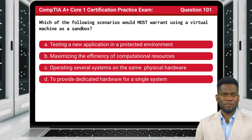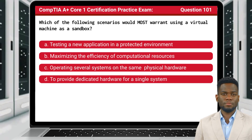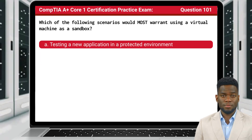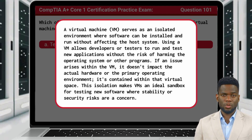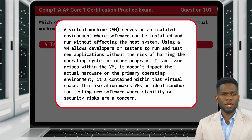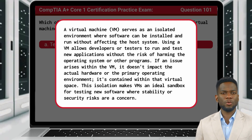Question 101: Which of the following scenarios would most warrant using a virtual machine as a sandbox? The answer is A: Testing a New Application in a Protected Environment. A virtual machine serves as an isolated environment where software can be installed and run without affecting the host system. Using a VM allows developers or testers to run and test new applications without the risk of harming the operating system or other programs. If an issue arises within the VM, it doesn't impact the actual hardware or the primary operating environment — it's contained within that virtual space. This isolation makes a VM an ideal sandbox for testing new software where stability or security risks are a concern.